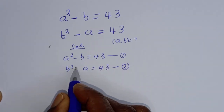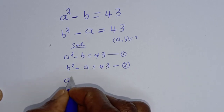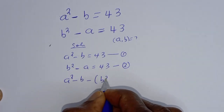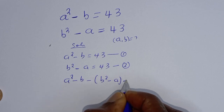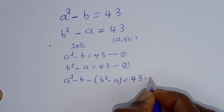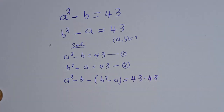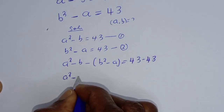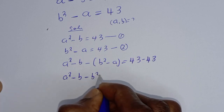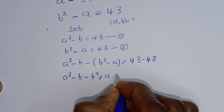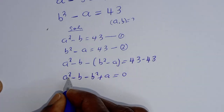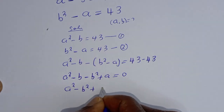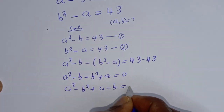Now let's subtract equation 1 from equation 2. That is, A squared minus B minus (B squared minus A) is equal to 43 minus 43. This gives us A squared minus B minus B squared plus A is equal to 0.